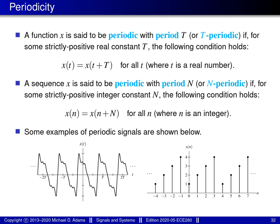Another property that signals can possess is periodicity. A function x is said to be periodic with period capital T, or simply T-periodic, if for some strictly positive real constant T, evaluating the function at t or at t plus T gives the same result for all real t. Effectively, the graph of the function repeats every T units along the horizontal axis. In the bottom left of this slide, there's an example of a T-periodic function where every T units the function repeats and cycles through the same values.